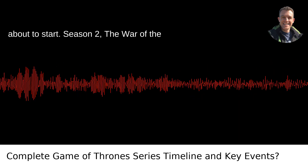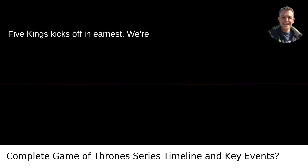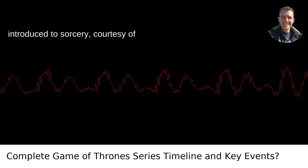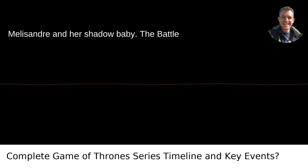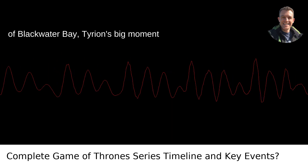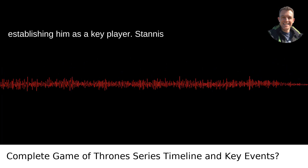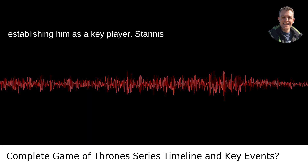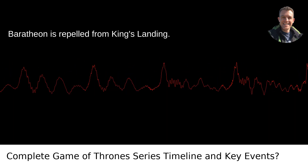Season two: the War of the Five Kings kicks off in earnest. We're introduced to sorcery, courtesy of Melisandre and her shadow baby. The Battle of Blackwater Bay is Tyrion's big moment, establishing him as a key player. Stannis Baratheon is repelled from King's Landing.